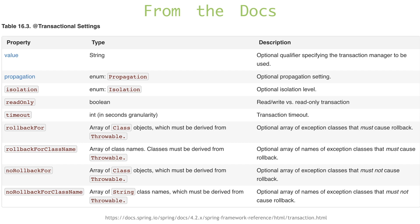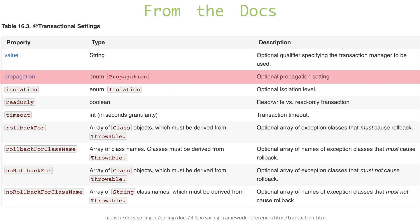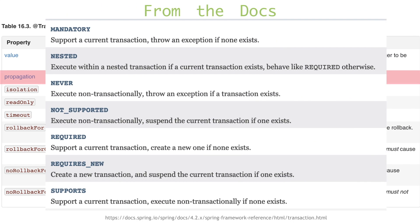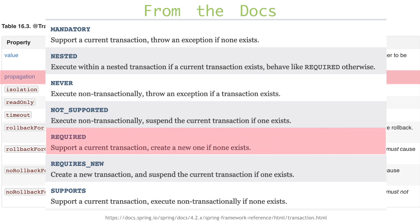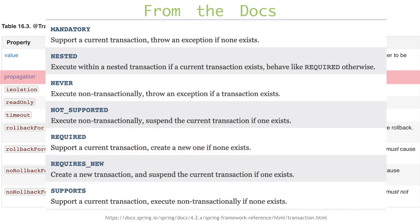This table from the documentation lists all of the settings. First, there is value, which specifies the transaction manager to be used. Then there is propagation — these are the transaction propagation behaviours defined by the propagation enum. The default propagation is REQUIRED, which supports a current transaction and creates a new one if none exists. If there is a transaction already started, this method will execute within that; otherwise, a new one will be created. REQUIRES_NEW creates a new transaction and suspends the current transaction if one exists.